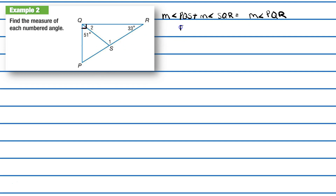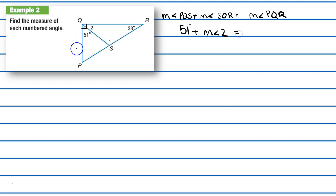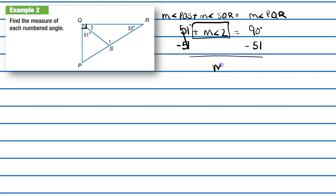So angle PQS plus angle 1 — which is 51 degrees — I'm doing substitution here. I don't know the measure of angle SQR, so I'll call it angle 2. The measure of angle 2 is equal to the measure of angle PQR, which is 90 degrees. Subtracting 51 degrees from both sides, the measure of angle 2 is equal to 39 degrees.